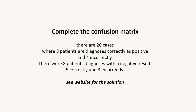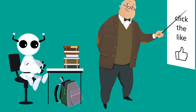Here's a bit of practice for you. Complete the confusion matrix — there are 20 cases. Eight patients are diagnosed correctly as positive and four incorrectly. Eight patients are diagnosed with a negative result: five correctly and three incorrectly. We'll leave you with that example. If you want to check your answer, go to the website. If you want to know when the next video is released, remember to subscribe and click the notification bell. And click like if you gained something from it.